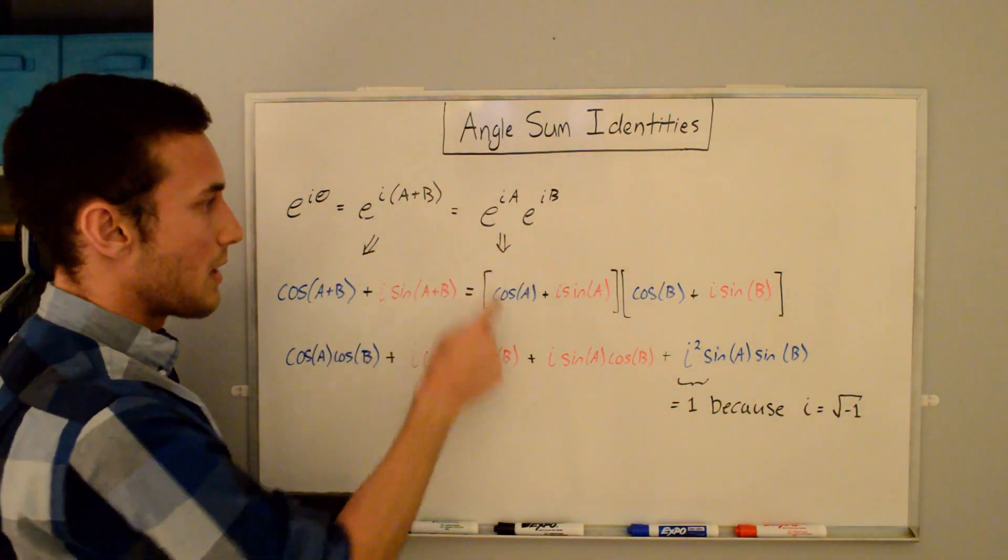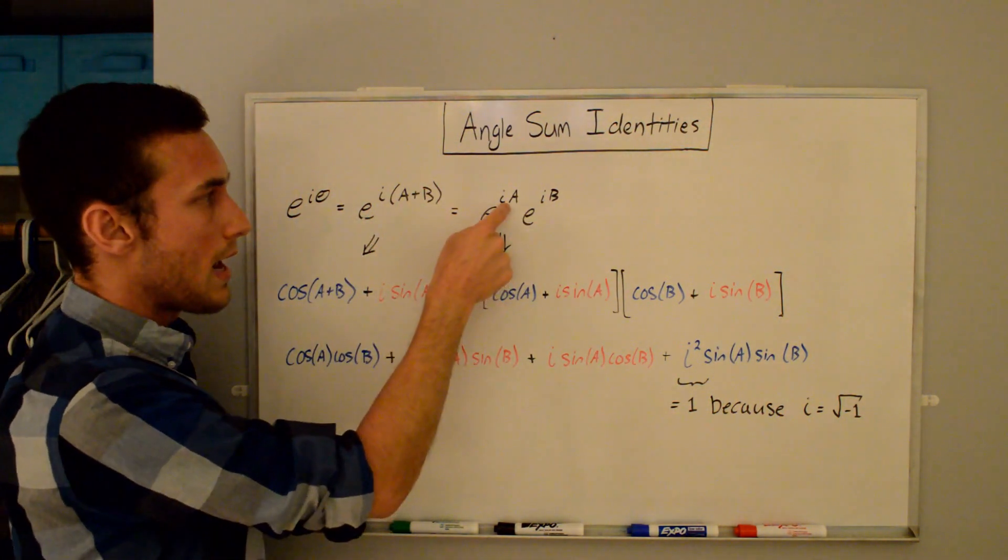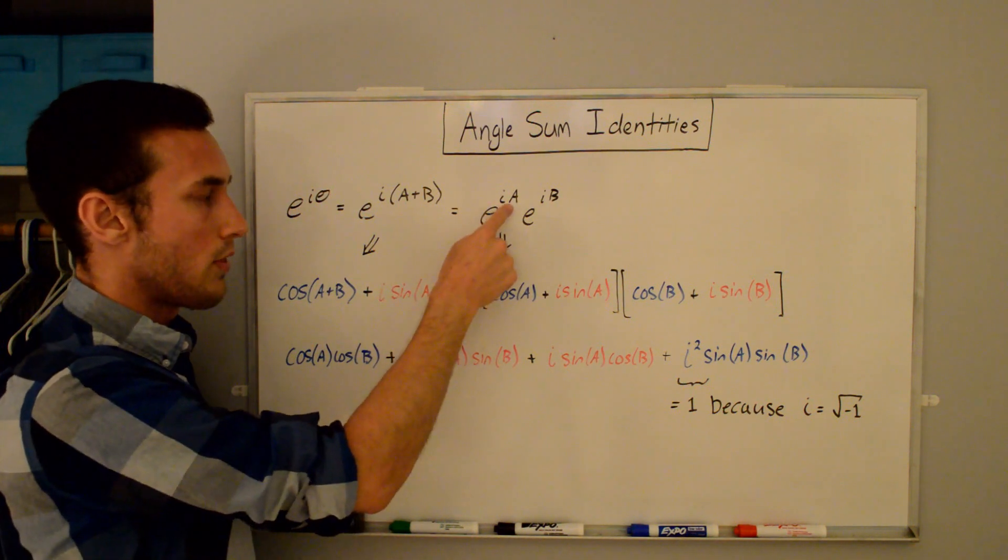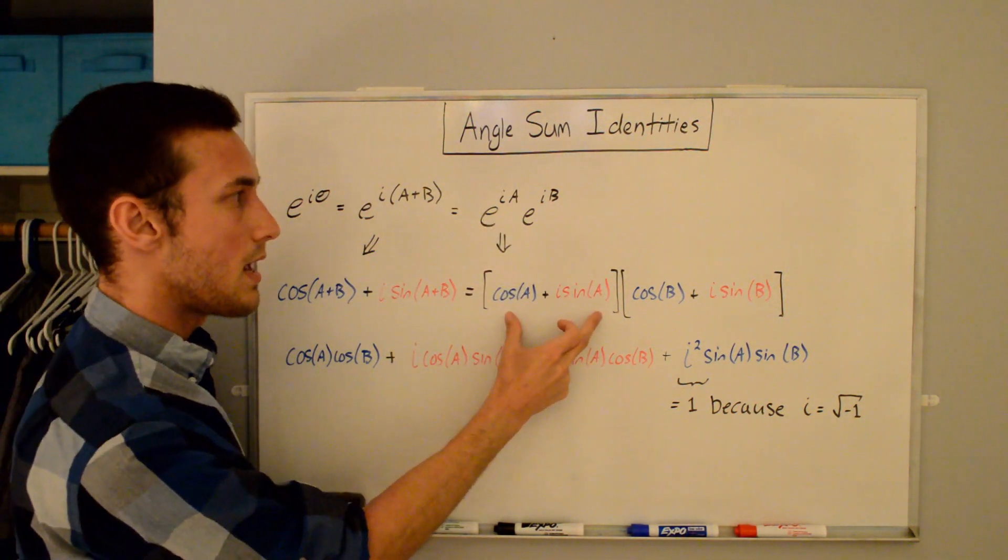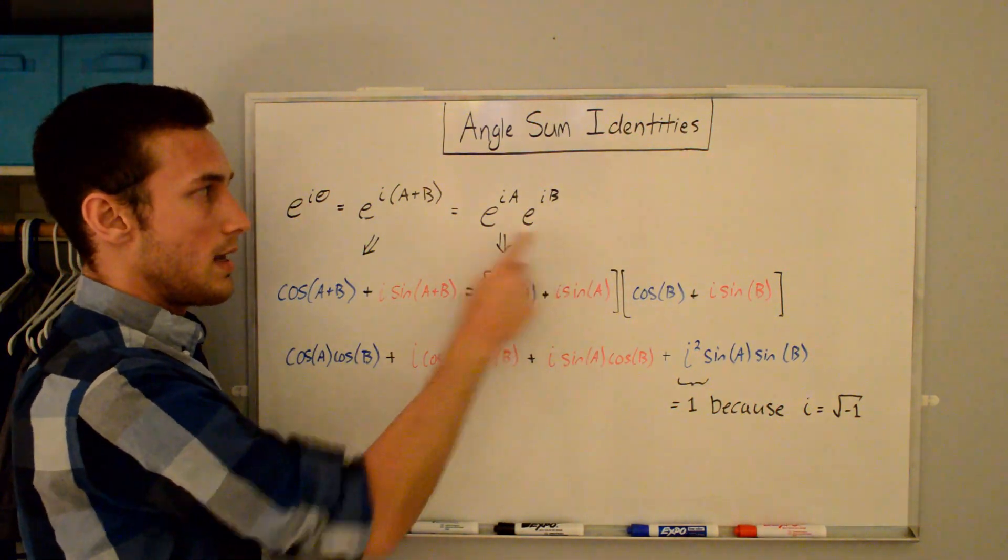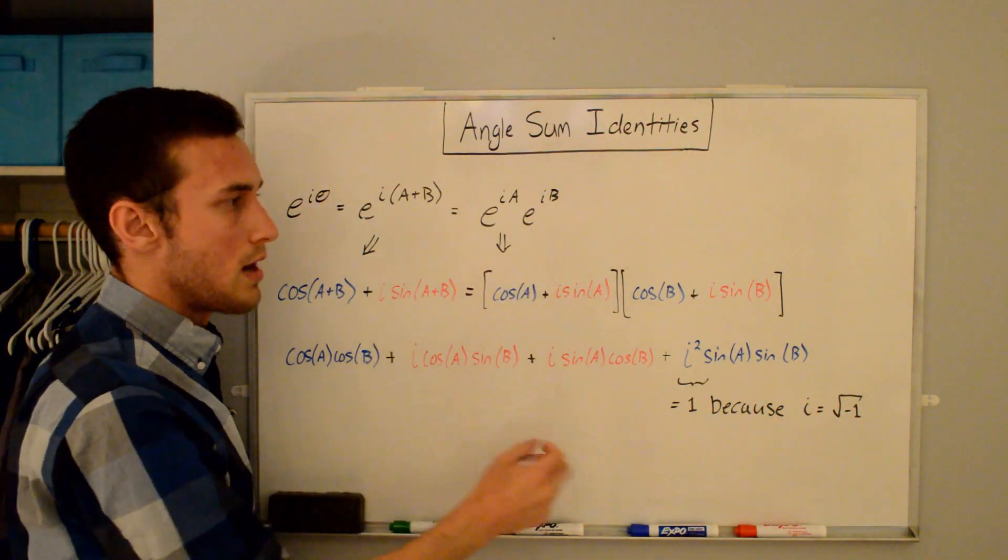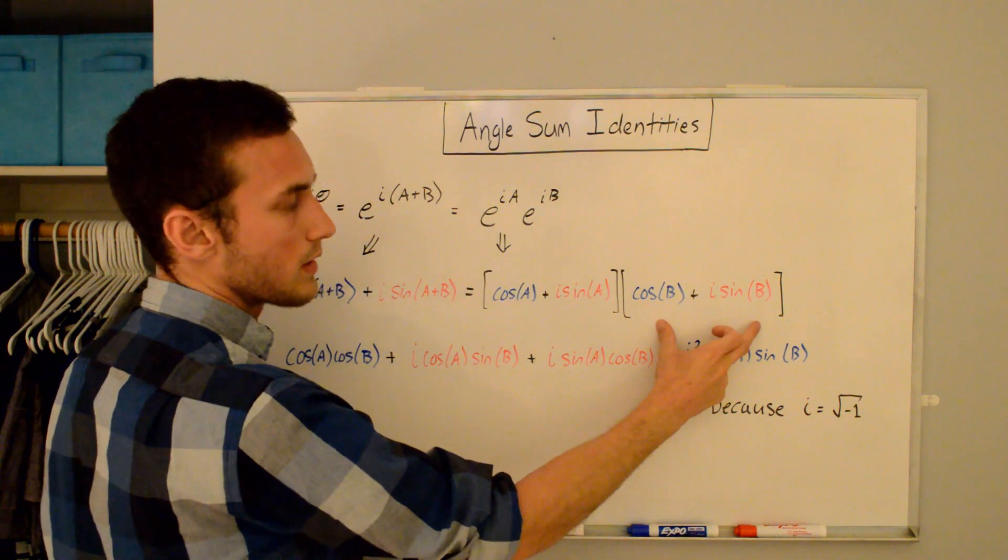Now with the product, let's expand this out. So for the e^(iA), just plug in A for theta in Euler's formula, and you get cos(A) + i·sin(A). Similarly for e^(iB), we just plug in B for theta, and we get cos(B) + i·sin(B).